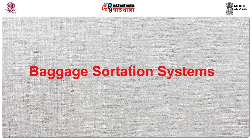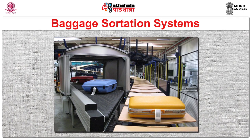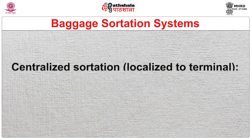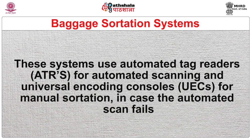Baggage sortation systems are used in the sorting of baggage and luggage. They are broadly of four types. First, centralized sortation — localized to the terminal — collects all the baggage, then initiates and transfers it to one location and further transfers luggage to the sortation system. These systems use automated tag readers (ATRs) for automated scanning and universal encoding consoles (UECs) for manual sortation in case the automated scan fails.